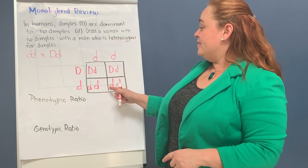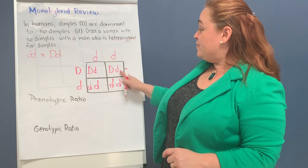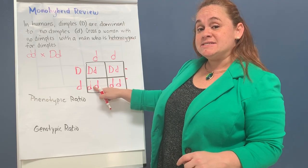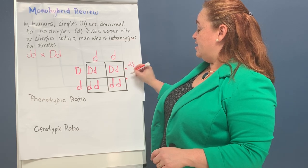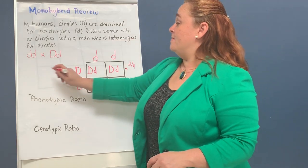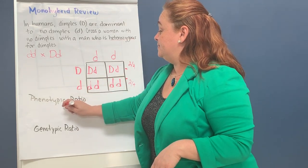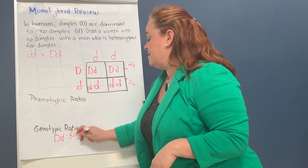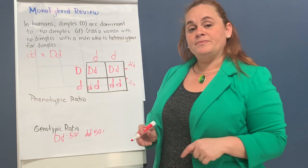Now that I have the results, let's look at the genotypes. The only genotypes I have are the heterozygous and the recessive trait. If you see, I have two of four that are the same and two of four that are the same. So my offspring is going to be 50% heterozygous and 50% recessive.